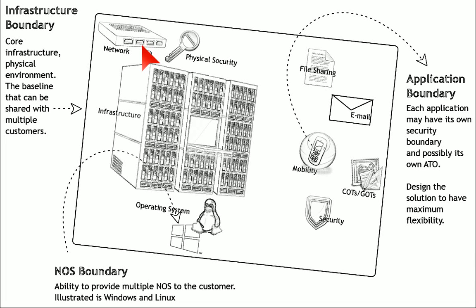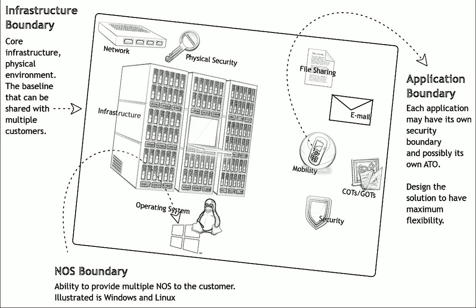This boundary includes the network piece, includes physical security, and includes the actual infrastructure of the environment. This is your core environment — the core infrastructure that's historically shared in multiple environments. You can have multiple operating systems or different applications. This probably accounts for 80% of most environments.